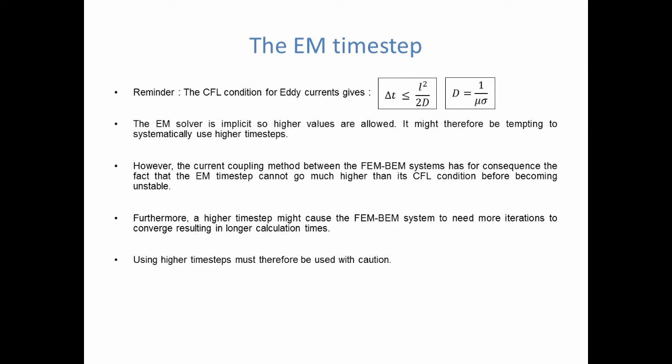Maybe 1.5 or twice as high, but not 10 times higher. Also, a higher time step may mean more iterations to converge — a higher computational cost per time step. So having a time step twice as high, even if the run is stable, wouldn't result in a run that goes twice as fast, because you need more iterations per time step. In summary, it is possible to play with the EM time step value to improve solving time, but use caution.